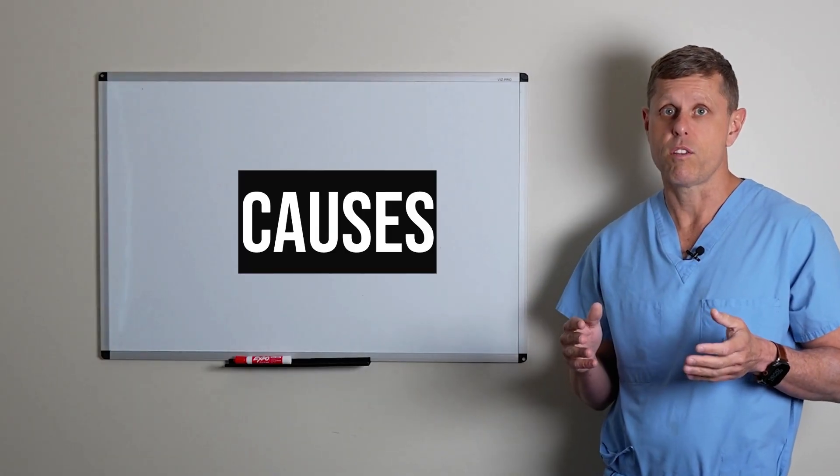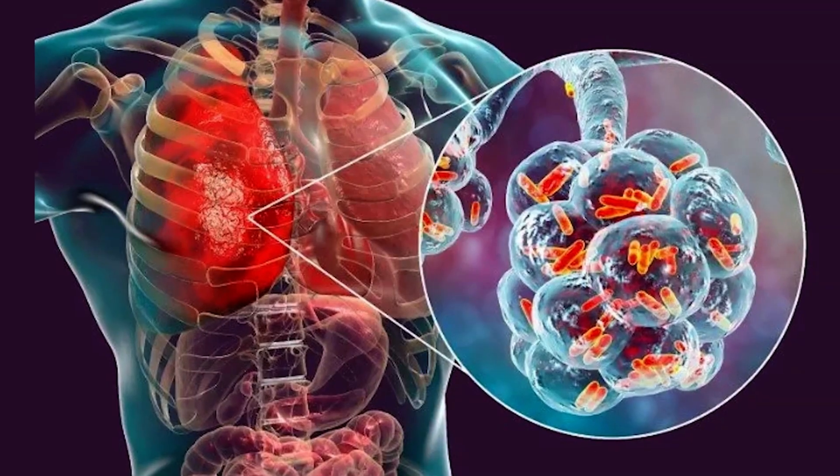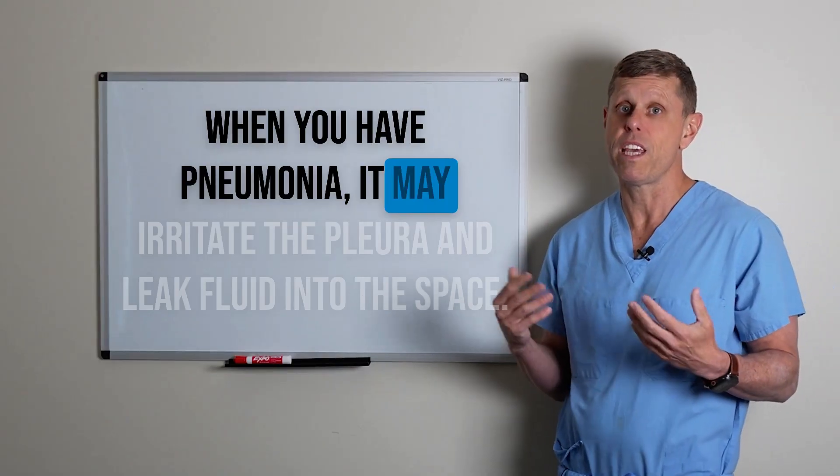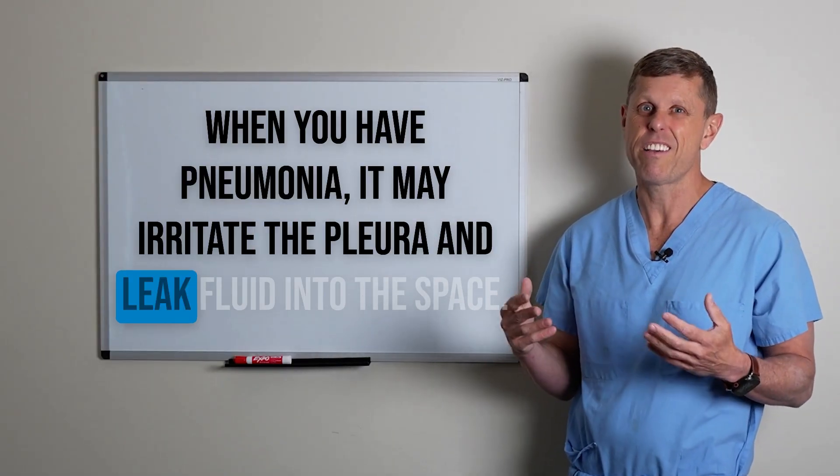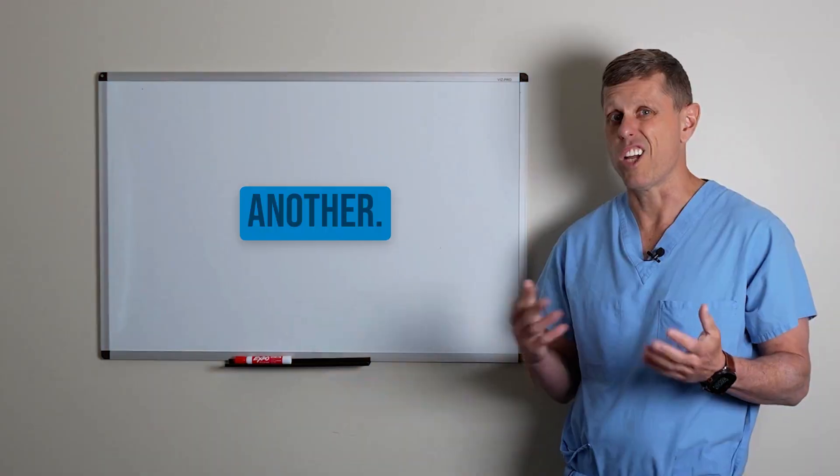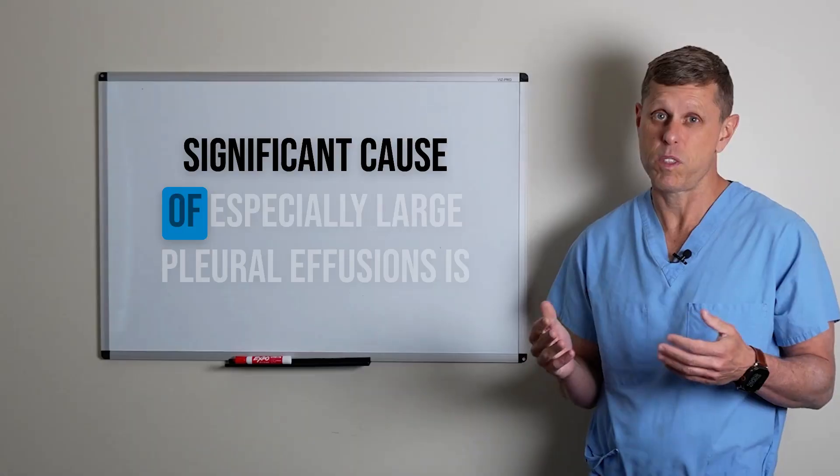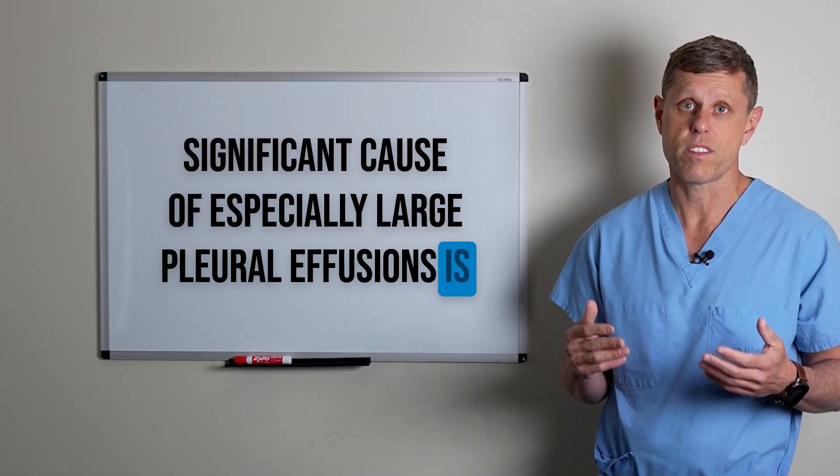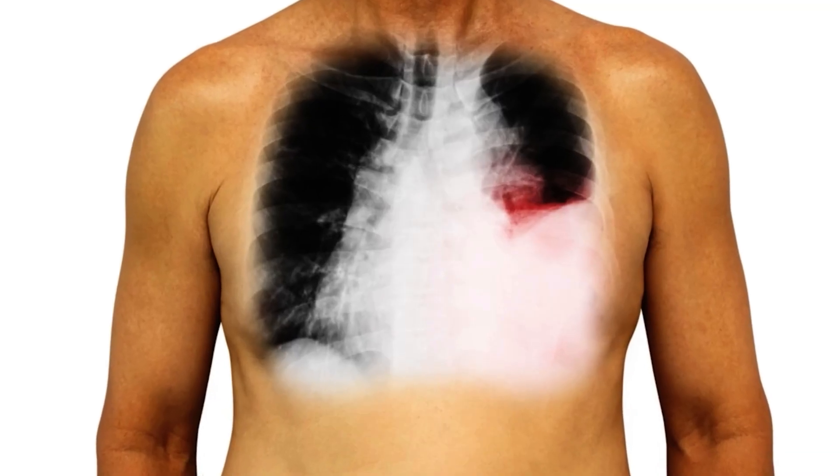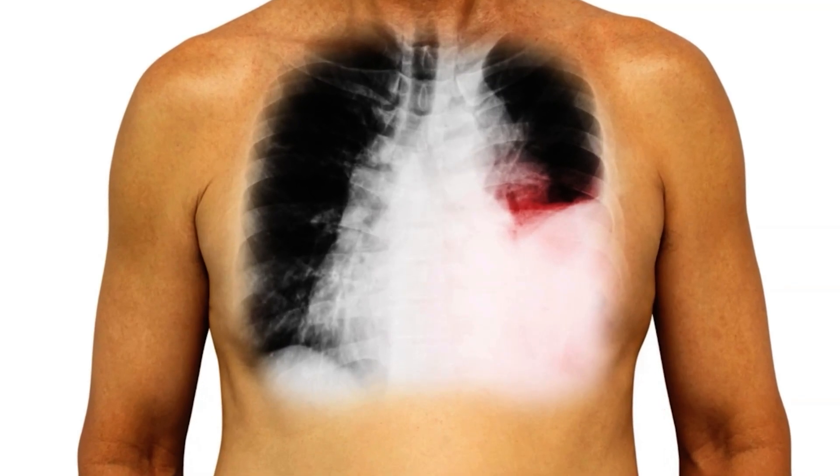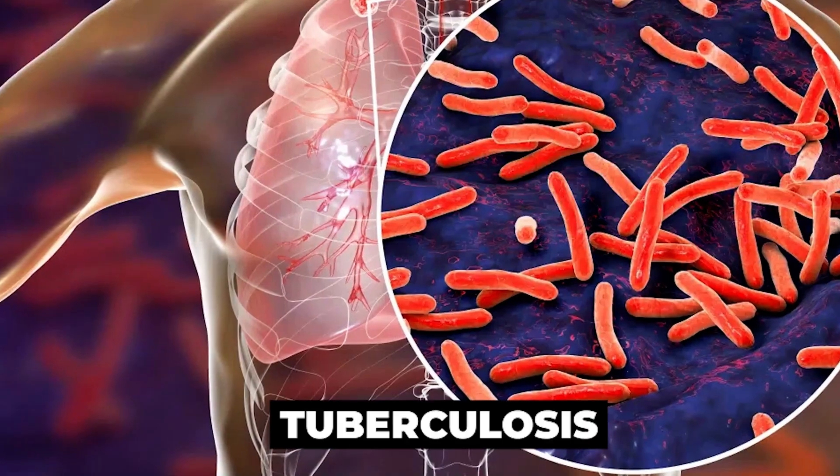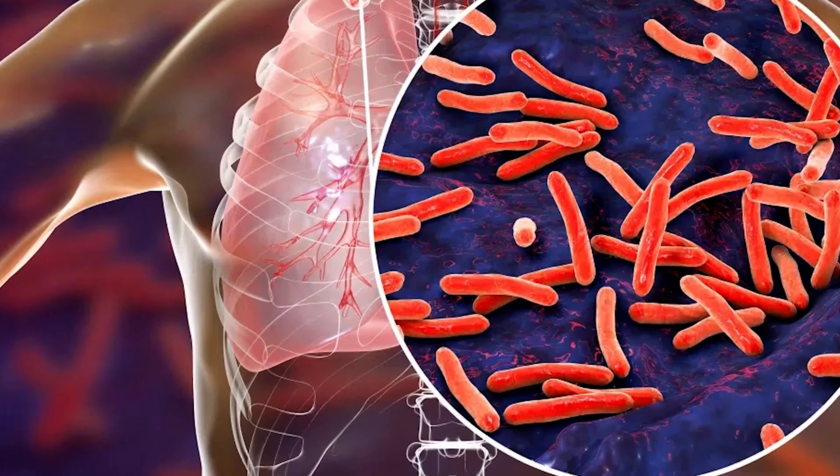Fluid buildup in the lung can also be secondary to an infection in the lung like pneumonia. When you have pneumonia it may irritate the pleura and leak fluid into the space. Another significant cause of especially large pleural effusions is if you have a cancer that is involved in the lung or the pleural space. In some situations, tuberculosis can also cause a large pleural effusion.